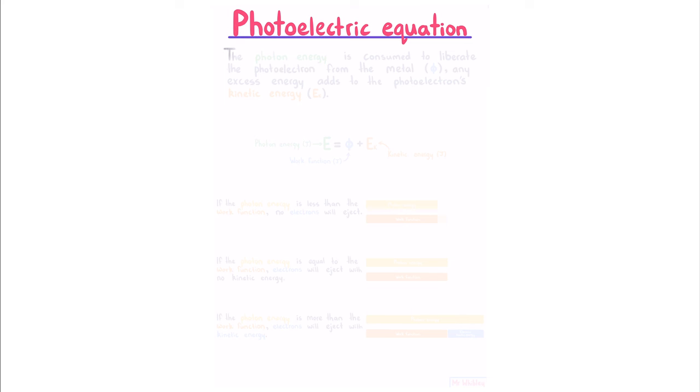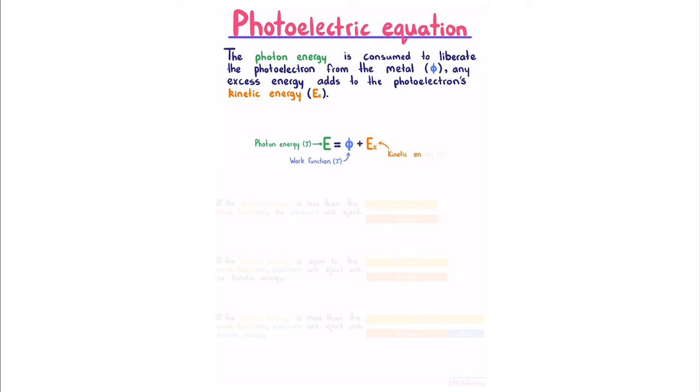Photoelectric equation. The photon energy is consumed to liberate the photoelectron from the metal. Any excess energy adds to the photoelectron's kinetic energy. Mathematically, our photon energy is equal to our work function plus the kinetic energy. If the photon energy is less than the work function, no electrons will eject.